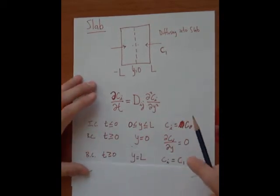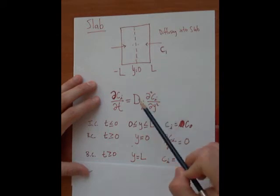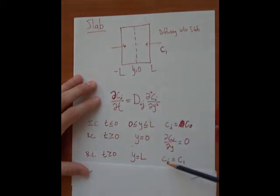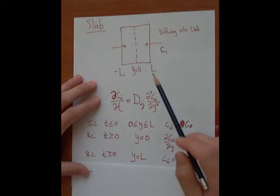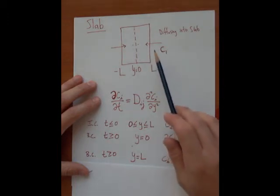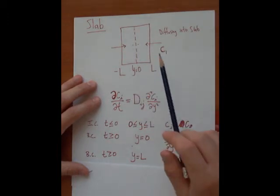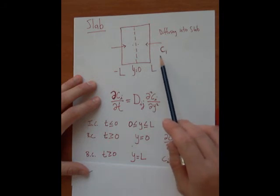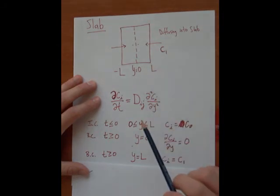Our other boundary condition, which is going to be at y equals L, is going to be that concentration will always remain at C1. So, at this surface, the concentration will always remain at the bulk concentration of the solution, which will be C1.